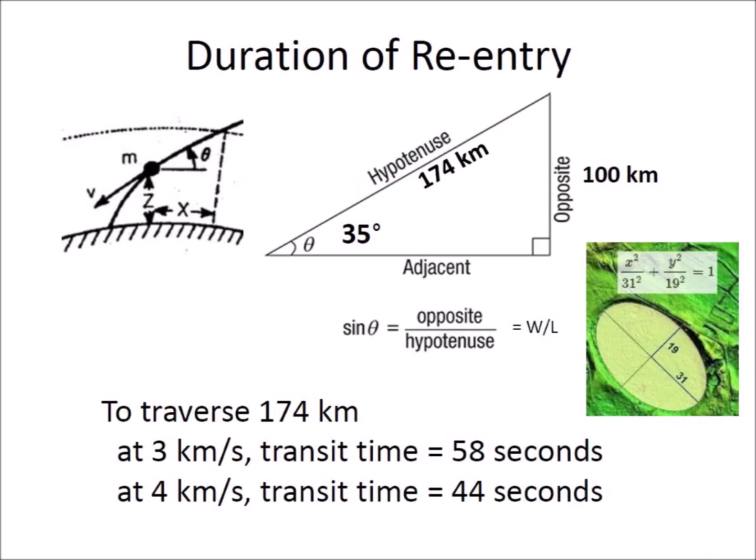We can estimate the time of reentry of the ice boulders by using the angle of impact derived from the width-to-length ratio of the Carolina Bays and the 100 km thickness of Earth's atmosphere. The oblique transit through 174 km of atmosphere at 3 km per second requires 58 seconds, and at 4 km per second the transit time is 44 seconds. This means that the glacier ice boulders had to withstand approximately one minute of ablation and heat during their reentry.